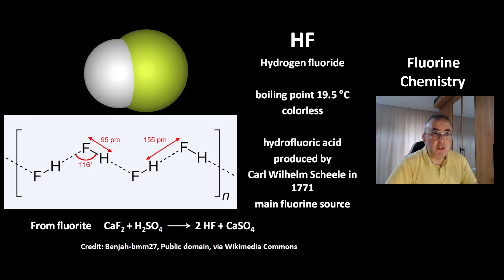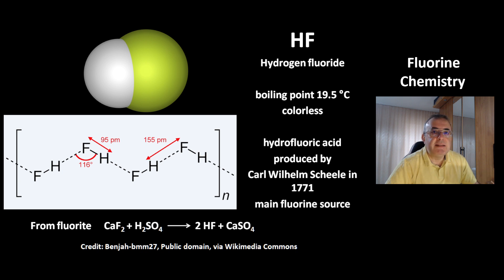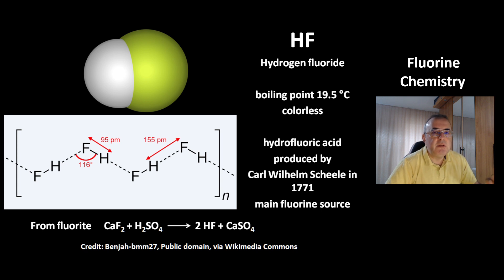This is an important compound in fluorine chemistry — that's hydrogen fluoride. It has a boiling point of 19.5 degrees Celsius and is colorless. The solution in water is called hydrofluoric acid, and it was first produced in large quantities by Carl Wilhelm Scheele in 1771. This compound is the main fluorine source. Hydrogen fluoride can be made from the mineral calcium fluoride by adding sulfuric acid, a stronger acid than hydrogen fluoride. The byproduct is calcium sulfate.